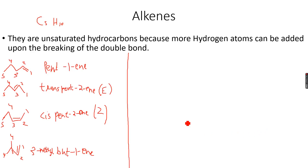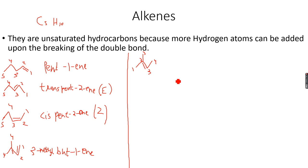For this isomer, if we start numbering, this is one, two, three, or three and four. You can see that the longest chain will have four carbon atoms, so the methyl carbon atom will not be part of the longest chain and therefore it will be a methyl group. There is a double bond.